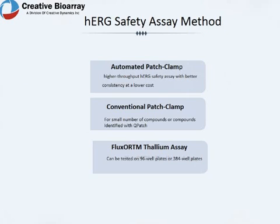There are three methods to test the effect of compounds on HERG potassium channels: namely, automated patch clamp, conventional patch clamp, and fluorescent thallium assay.